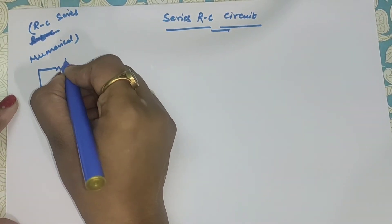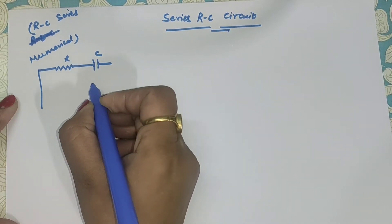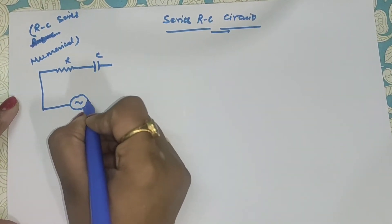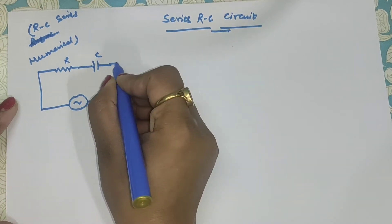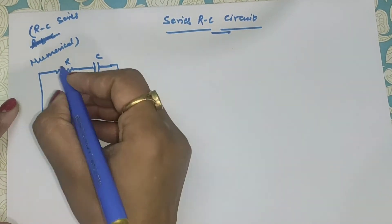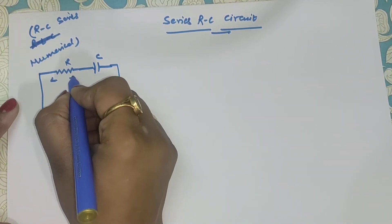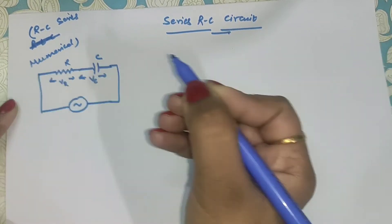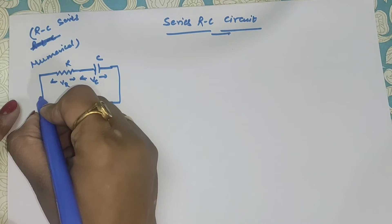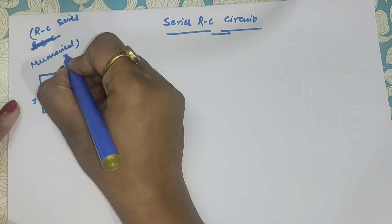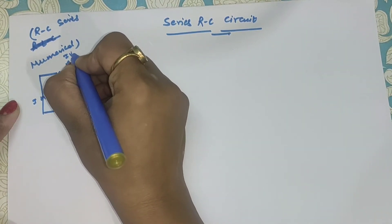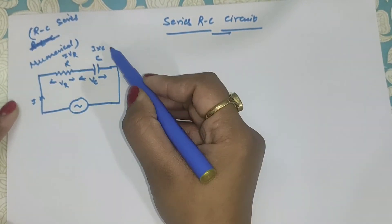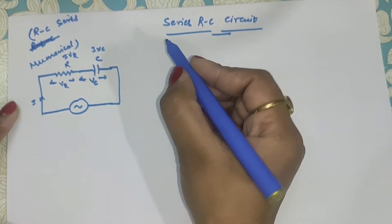One R and one capacitor C are connected in series, and the AC supply is given to that circuit. The voltage around VR and at VC — current I is flowing in the series, so we have IVR and IXC, because the capacitance reactance is XC.